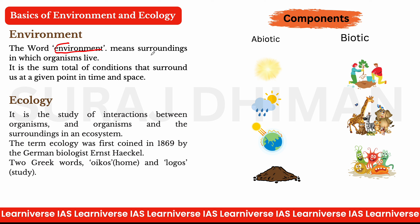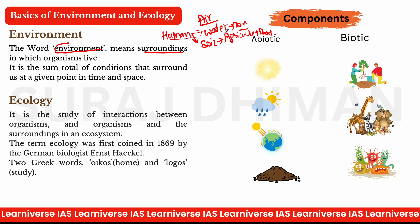First, Environment. Environment is about surroundings. Humans depend on the environment — we have oxygen, air, water. Our body is 70% water. Water is the basic element of life. Soil is also something we depend on. Environment is the sum total of the conditions that surround us at a given point in space.